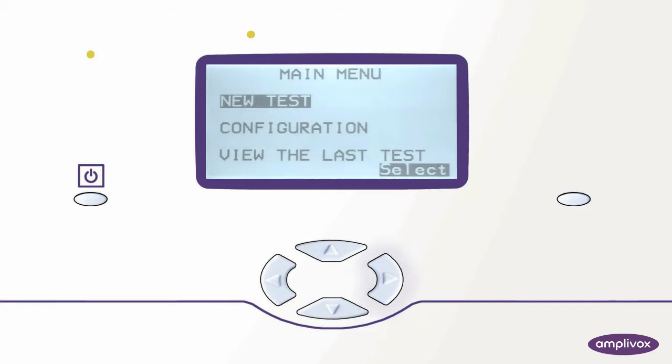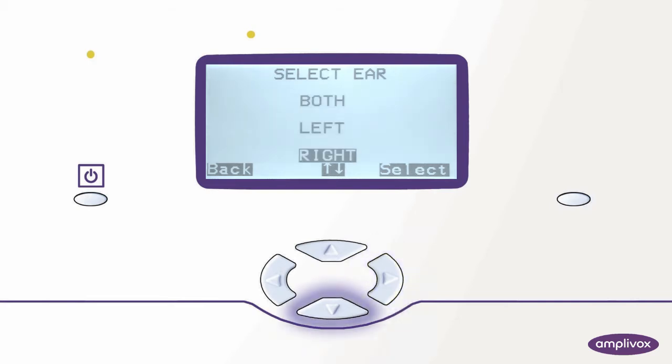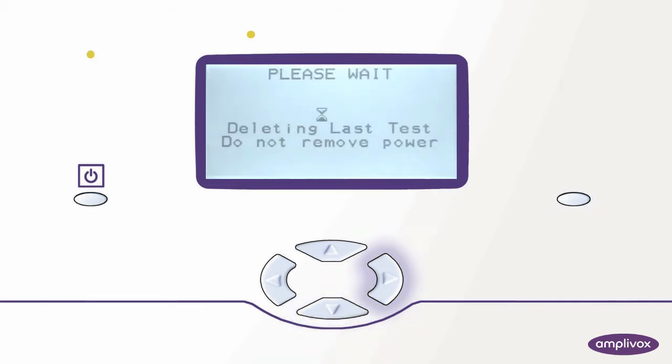From the main menu select the right key to start a new test. As soon as the earset selection is made, the probe check will start automatically.